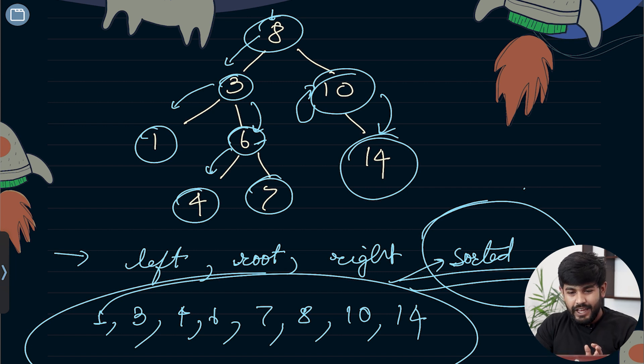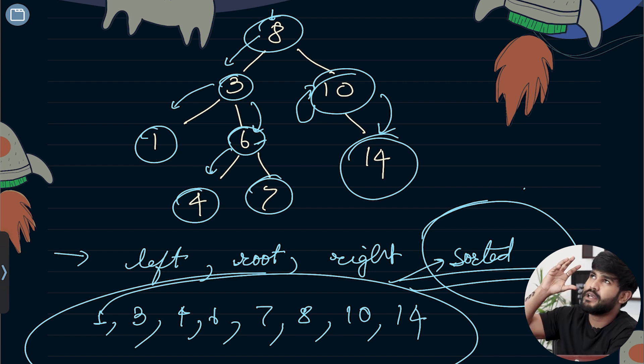Now if it is asked whether the given array is an in-order traversal of BST or not, in-order traversal of BST would be a sorted result. So if this array is sorted, then this is an in-order traversal of BST. When is an array really sorted?